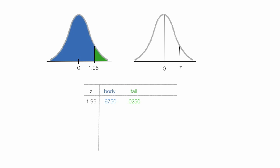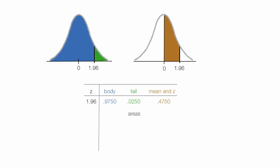Now let me draw another bell curve here. This time, I'm going to show you the area between the mean and z, which is the brown area. This is the probability an observation is between the mean and 1.96 standard deviations away from the mean. The value would be 0.4750, or 47.5%. All three of these values — or areas — are interrelated.